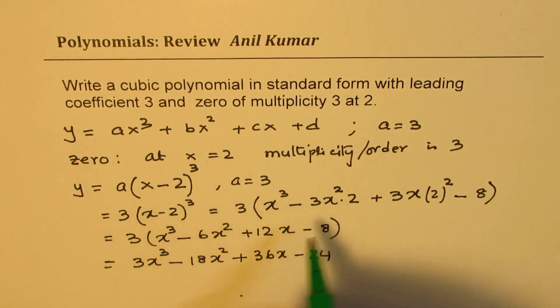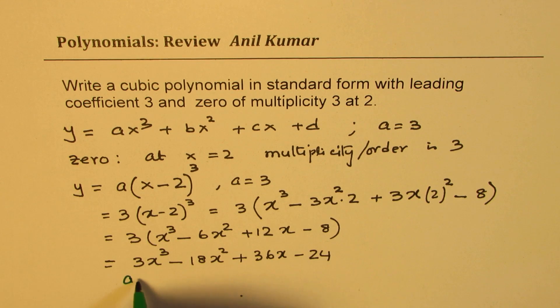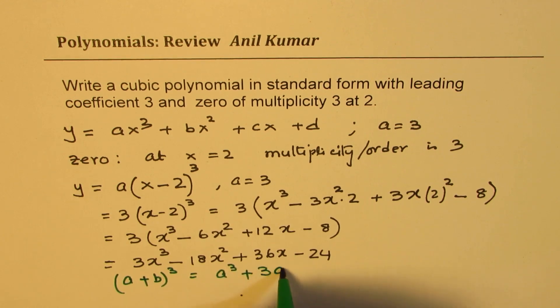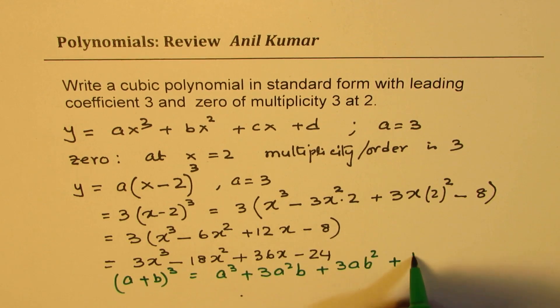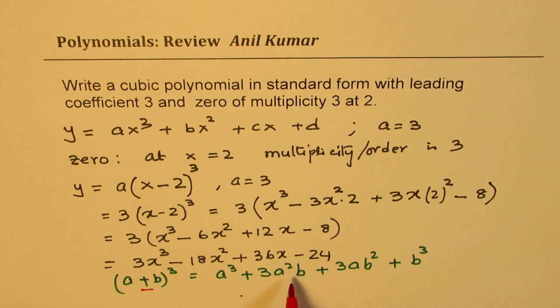Let me write down here: if you have (a + b)³, then the formula is a³ + 3a²b + 3ab² + b³. However, we had minus, so if you replace b with minus b, then all the terms where b has odd powers will become negative.